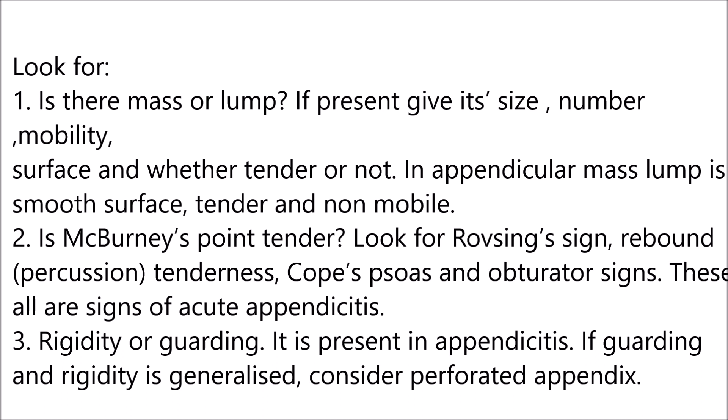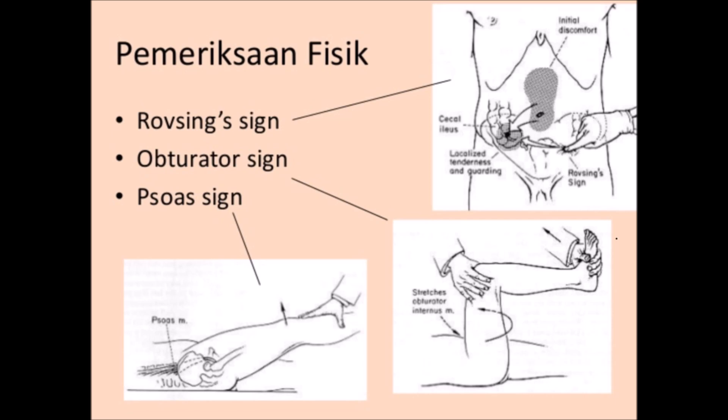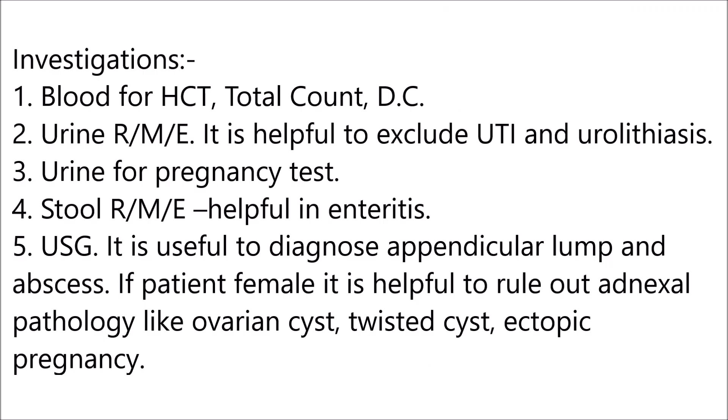In appendicular mass, the lump has a smooth surface, is tender, and non-mobile. Is McBurney's point tender? Look for Rovsing's sign, rebound tenderness on percussion, psoas sign, and obturator sign — these are all signs of acute appendicitis. Rigidity or guarding is present in appendicitis. If guarding and rigidity are generalized, consider perforated appendix. Investigations: blood for hematocrit, total count, differential count; urine examination to exclude urinary tract infection and urolithiasis; urine pregnancy test; stool examination helpful in enteritis; ultrasound to diagnose appendicular lump; in female patients, it helps rule out adnexal pathology like ovarian cyst, twisted cyst, and ectopic pregnancy.